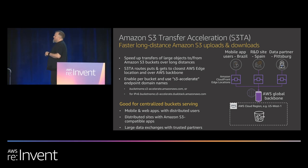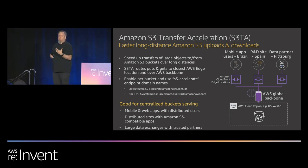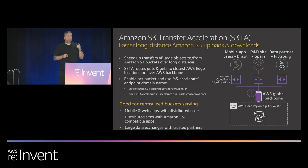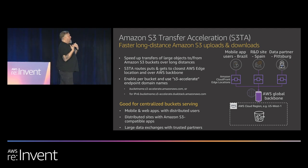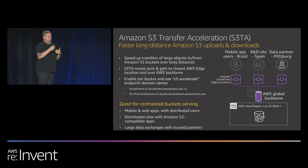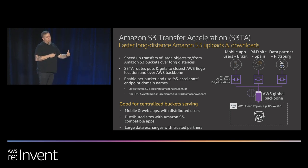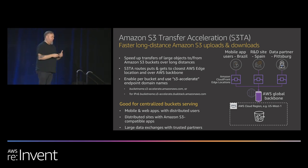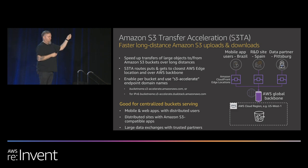S3 Transfer Acceleration: S3 is a global service and you can access buckets over the internet. Transfer Acceleration helps solve the network problem. If I'm in Berlin connecting to a bucket in Singapore over the internet, packet loss, latency, and out-of-order packets hurt performance. Transfer Acceleration lets you connect to the closest AWS edge location, and your data gets transferred over the Amazon global network — giving you all the bandwidth and protocol optimizations with the most efficient path from the edge back to the S3 bucket.